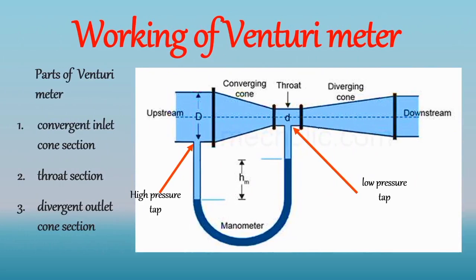As fluid enters the inlet convergent cone, it smoothly converges as the area of this section is decreasing. And due to this fluid velocity increases and pressure decreases. Then in the uniform throat section due to constant area, there is no change in fluid velocity.